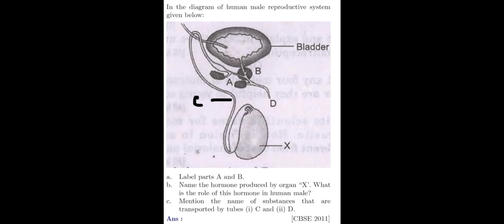Question 6. Here is another question related to human male reproductive system. In the diagram of human male reproductive system given below, observe the diagram carefully. Here also we have three questions. Question A, label the parts A and B. Question B, name the hormone produced by the organ X. What is the role of this hormone in human male? Question C, mention the name of substances that are transported by tubes C and D.